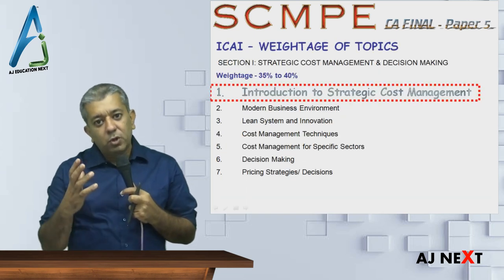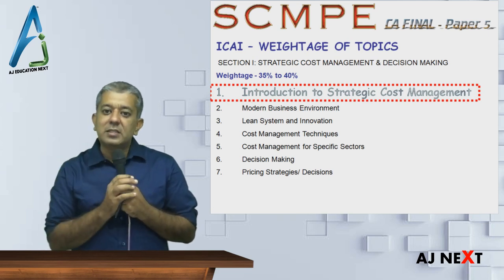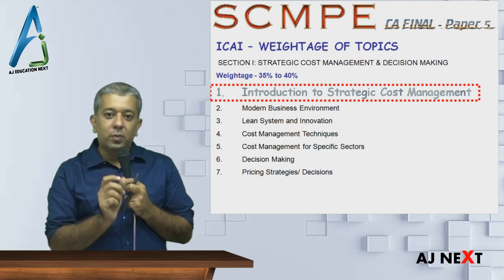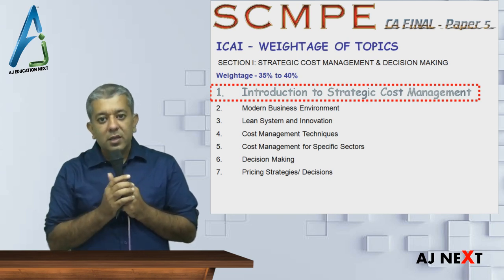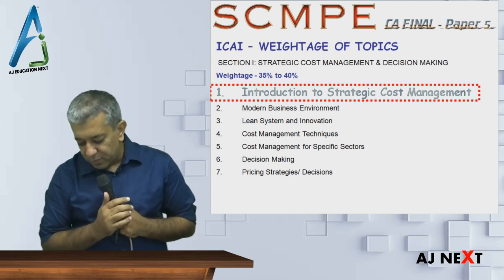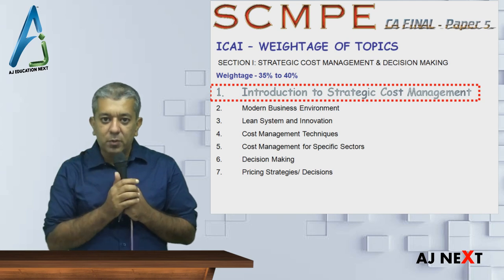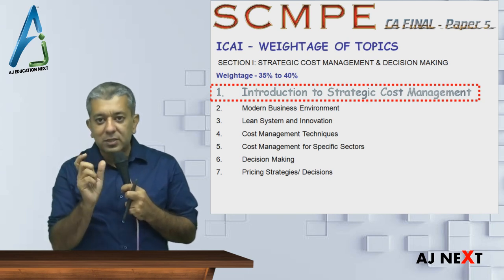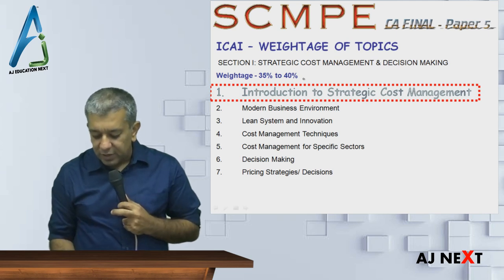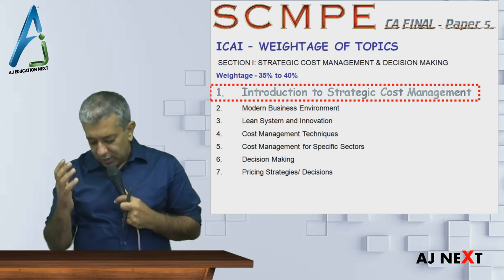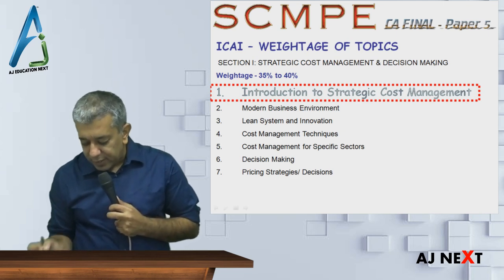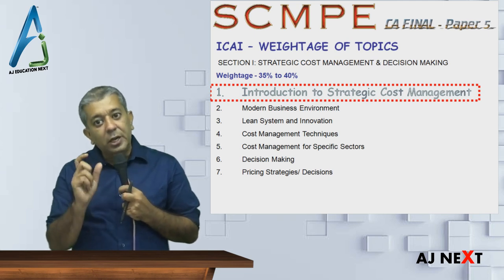Now coming back to the topics of this particular subject. ICAI has divided this entire paper into 12 topics, plus a 13th one that is case studies. ICAI for the first time in the new subject gave you weightage of each and every part. The first section is strategic cost management and decision making, which approximately carries a weightage of 35 to 40 marks. In this section we are going to have seven topics.